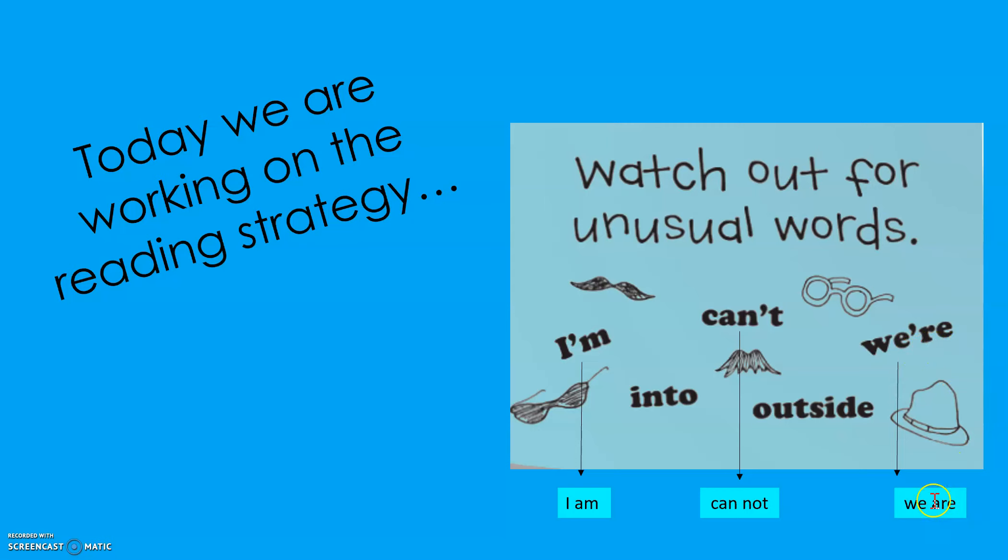If you see an apostrophe re, it's for the word are. The word here is we're. When you use contractions, it's just a shorter way of saying words, and that's all it is.